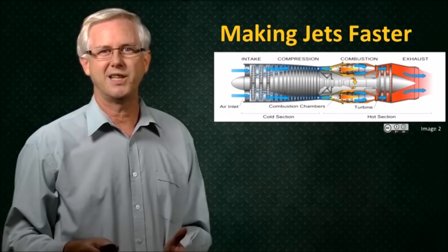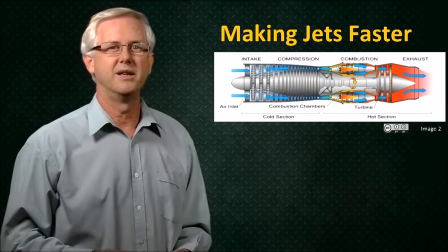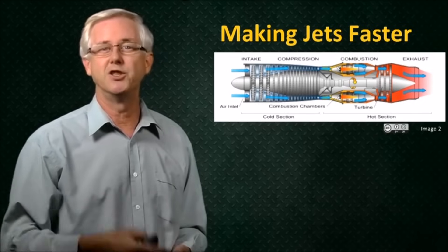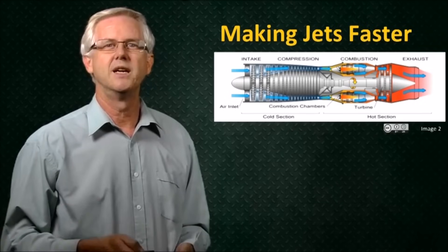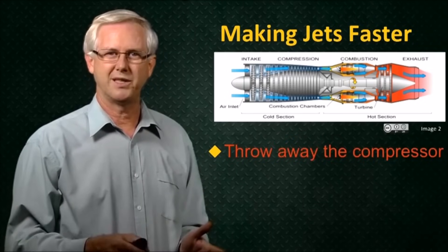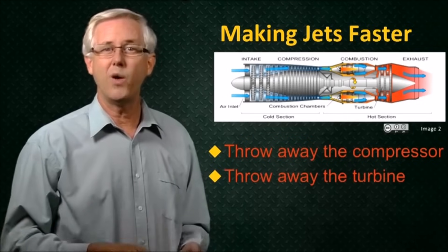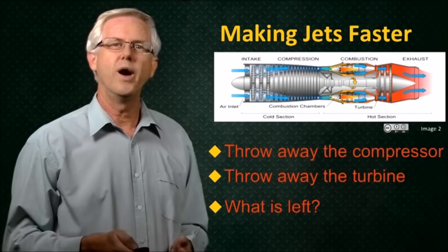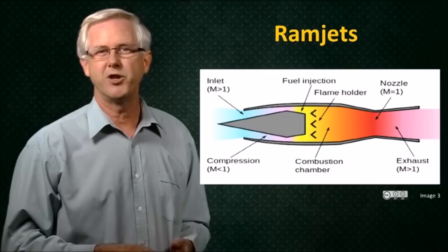If we don't need the compressor, then we don't need the turbine, because as we saw in the last video, the turbine is just there to drive the compressor. So we can throw away the compressor, we can throw away the turbine, and we'll see what we have left. Well, what's left is a ramjet.